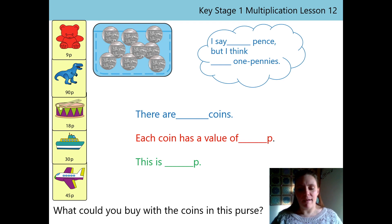This challenge is for you. I'd like you to work out, just like we have been, what I can buy with the coins in my purse. You've got all the information you need on this one screen, so pause the video and work out what I can buy. Welcome back. Did you fill in all these parts? Did you say, I say 10 pence, but I think 10 one pennies. Did you tell me that there are 9 coins and that each coin has a value of 10p? And then, did you work out that the total value of the coins in my purse are 90p? Well done.